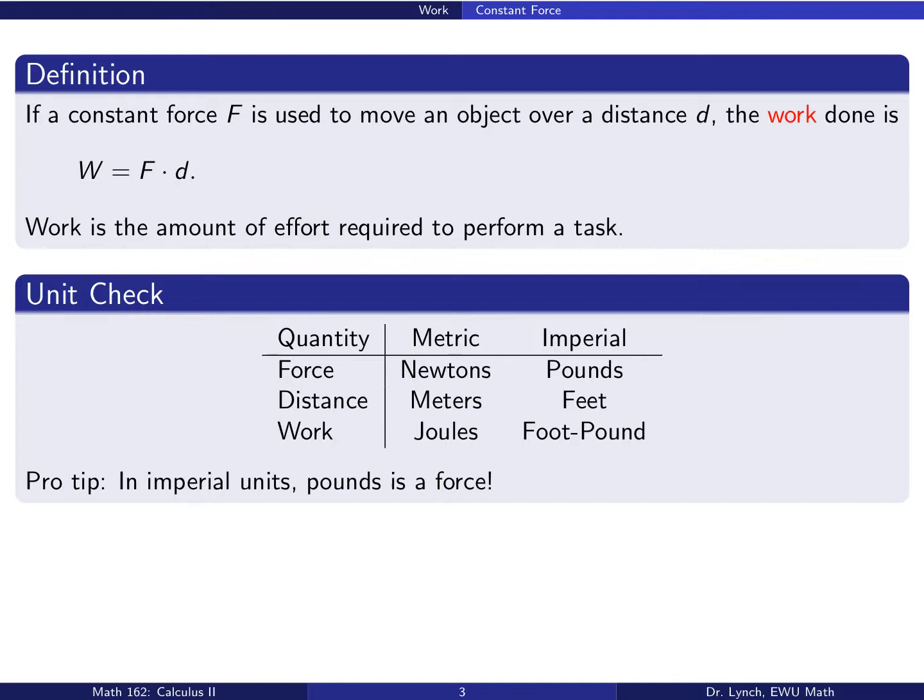By definition, when a constant force F is used to move an object over a distance d, the work done is work equals force times distance. You can think about the work as the amount of effort required to perform a task.